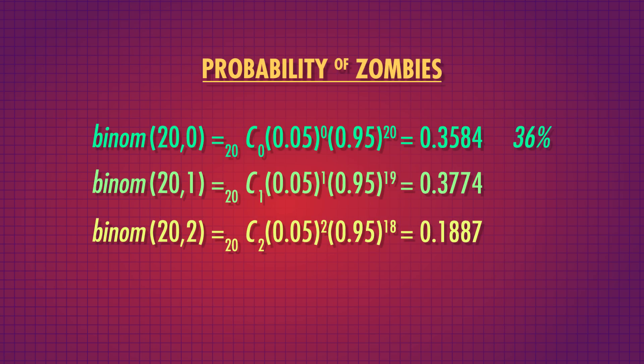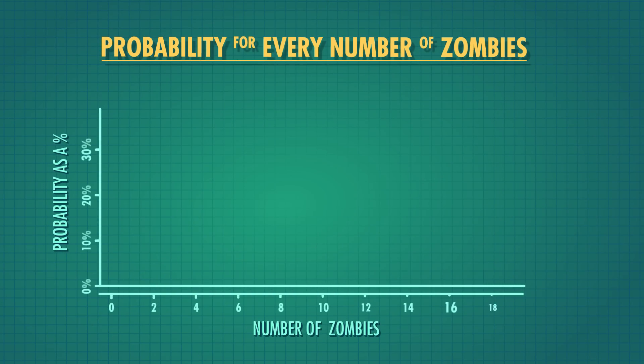There's about a 36% chance of meeting no zombies, about a 37% chance of having only one easily dodgeable zombie, and about an 18% chance of having to outmaneuver only two. Cumulatively, that's about a 91% chance that you'll be able to sprint your way to safety. We could calculate the probability for every possible number of zombies from 0 to 20, giving us the discrete distribution for this specific problem — 20 events with a 5% probability of the event of interest. But in a more general sense, I also want to know how many zombies I would expect to confront on average, just so I can prepare.